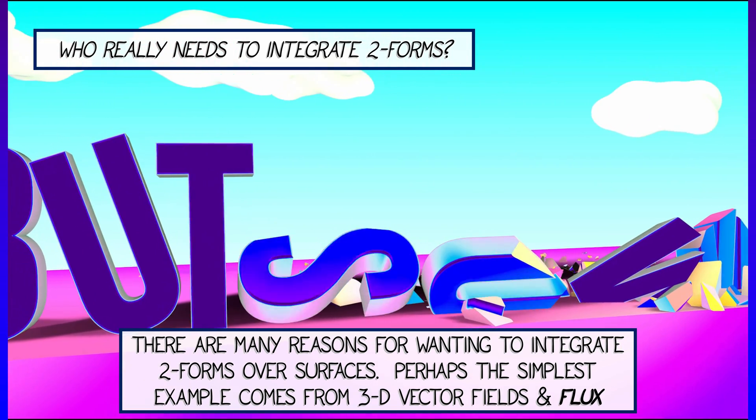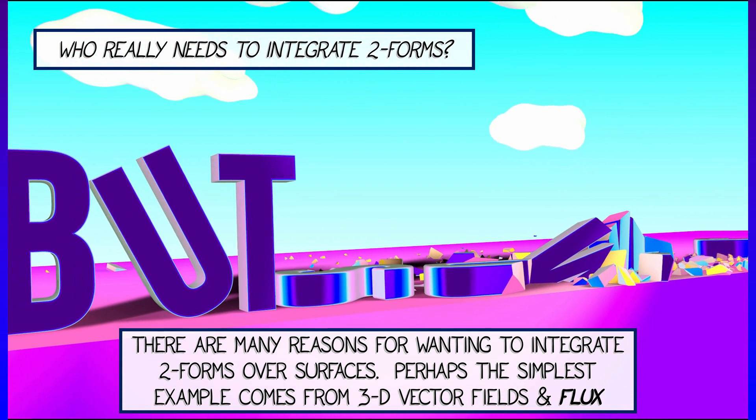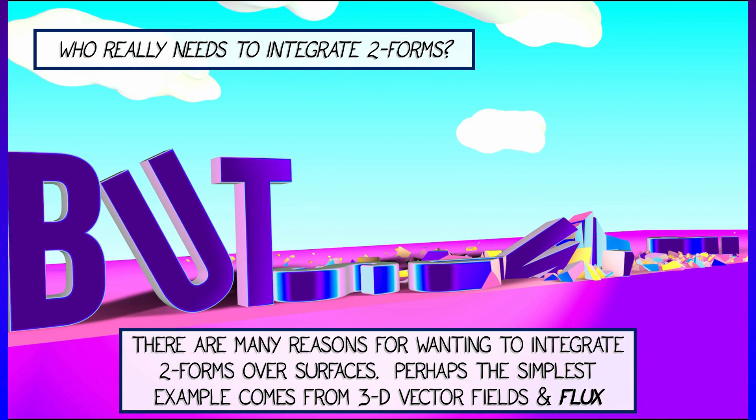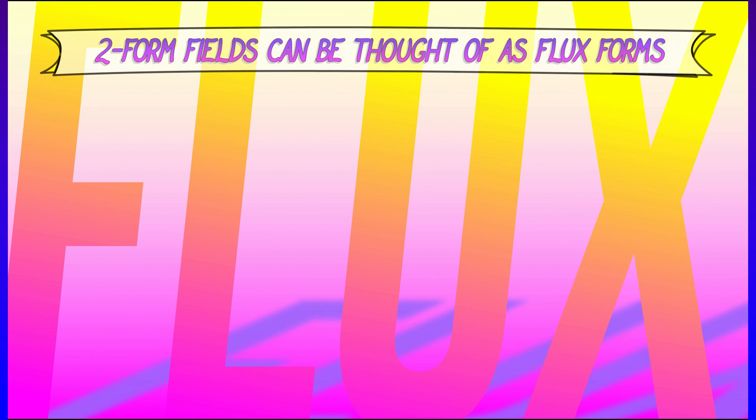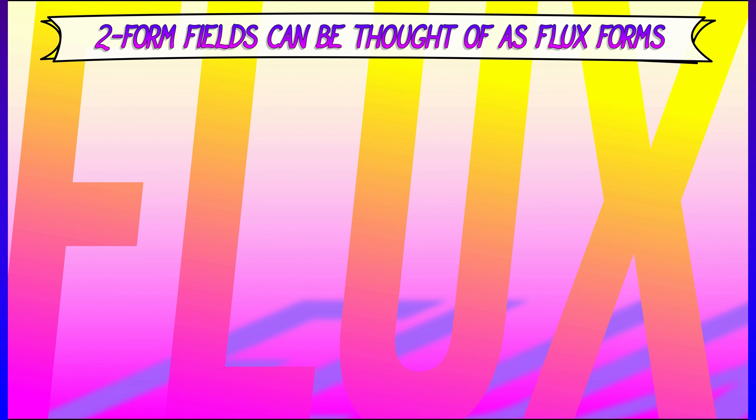Perhaps the best example comes from computing flux associated to vector fields. Two-form fields can be thought of as flux forms for some vector field in 3D. Remember how this works.